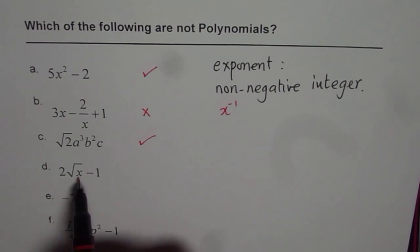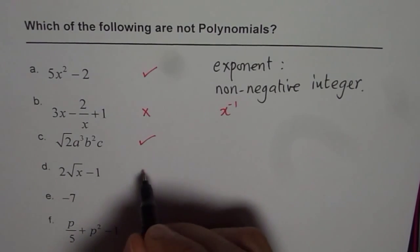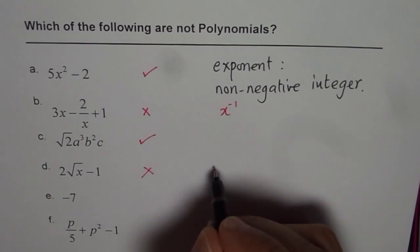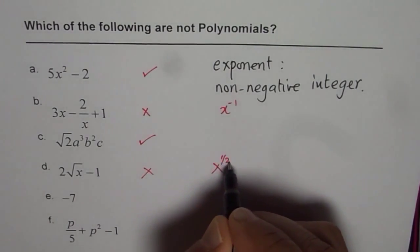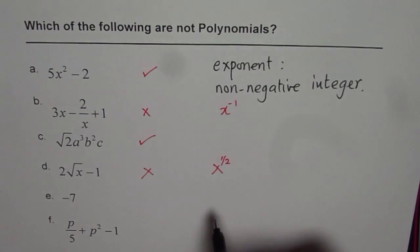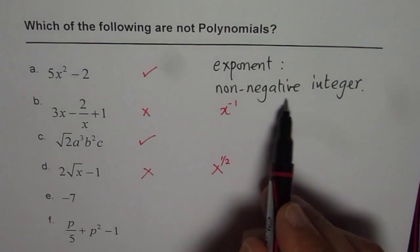In part d, we have square root of x. This is also not a polynomial since it is x to the power of half. Half is not an integer. So, we are looking for non-negative integers.